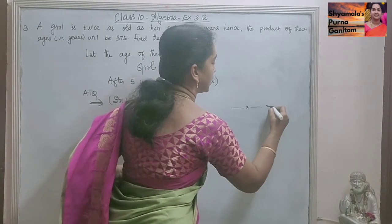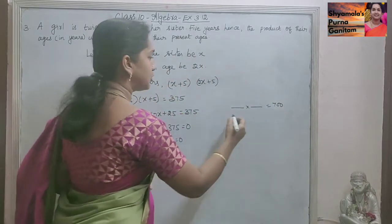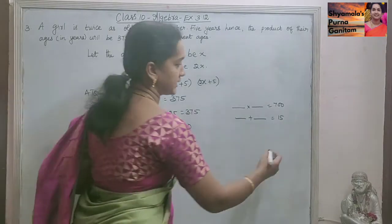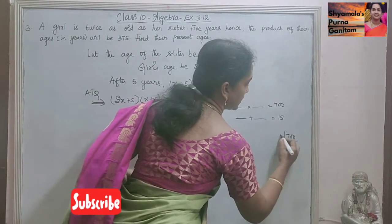So when we multiply, we need to get 700. The same 2 numbers if we add, we have to get 50. Accordingly, we have to take the numbers. So 700.